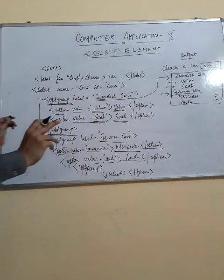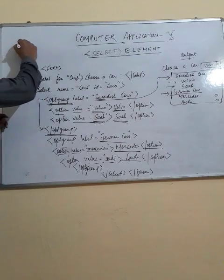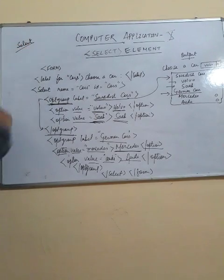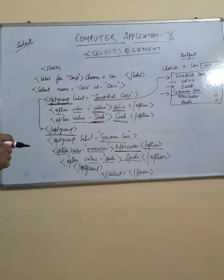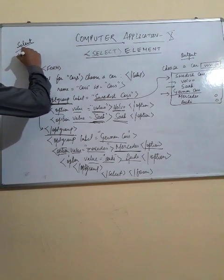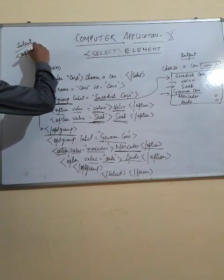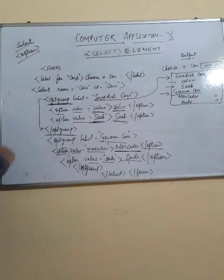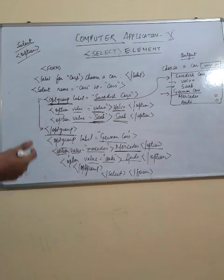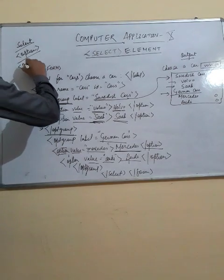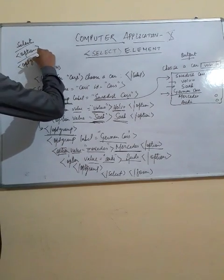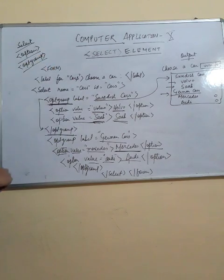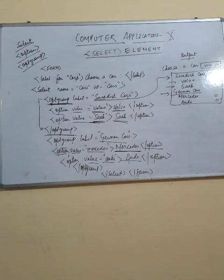There are three things you must remember. First, the select statement is used to define the list. Second, under the list, if you want to define individual items, you define them using the option tag. Third, if you want to define a group, you use the optgroup element so that elements can be displayed in a group.